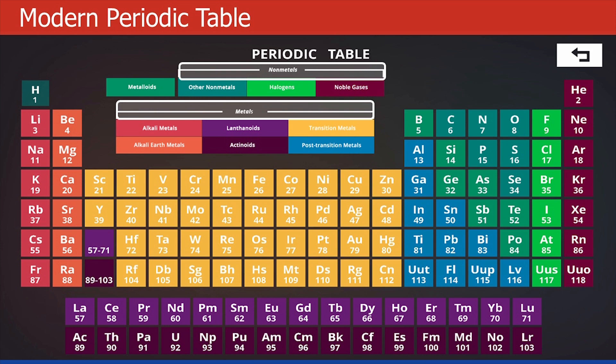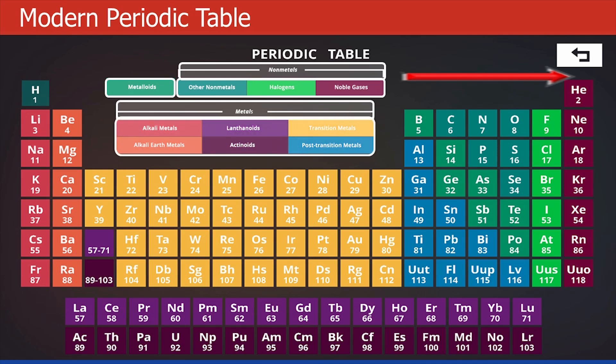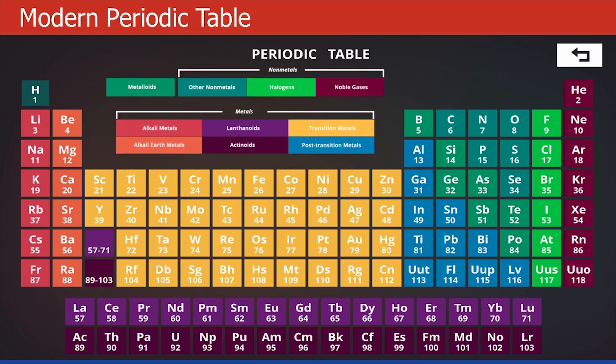Here the non-metals are on the right-hand side of the periodic table, which are coded in shades of green and maroon. Then you can also see metalloids in the shade of green because this has properties of both metal and non-metals. All other color-coded elements are metals. Let's begin our understanding with metals.